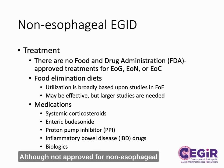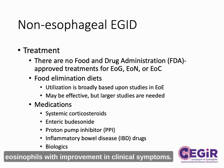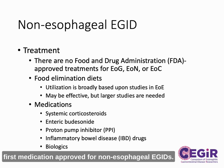Although not approved for non-esophageal eGIDS, biologics hold tremendous promise. Early phase clinical trials have demonstrated significant reduction in lower GI tract eosinophils with improvement in clinical symptoms. Phase III trials are currently underway for several agents and could pave the way for the first medication approved for non-esophageal eGIDS.